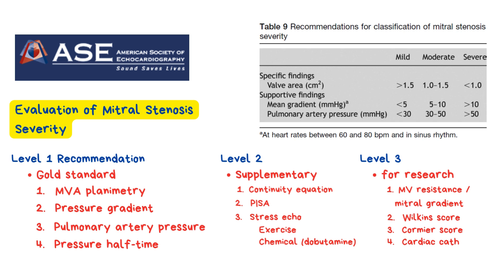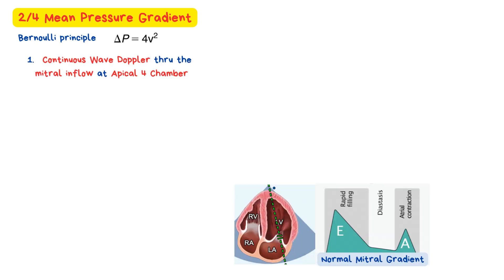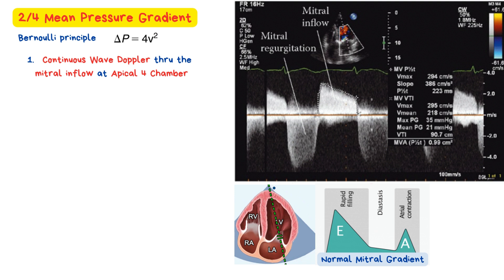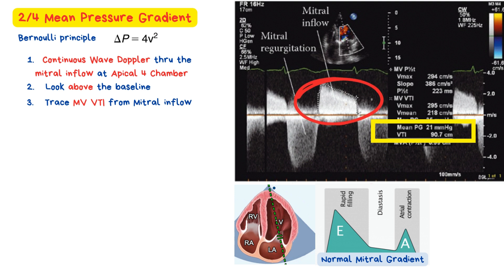Let's dive deeper into our second Level 1 recommendation: mean pressure gradient. The mean pressure gradient is calculated by the machine using the Bernoulli principle. We start by using the continuous wave Doppler, placing the cursor through the mitral inflow, typically from the apical four-chamber window. Make sure you're looking above the baseline, since blood is flowing up towards your probe — from the left atrium to the left ventricle. Once lined up, freeze the clip and trace the Mitral Valve Velocity Time Integral, or MVVTi. This will give us both the MVVTi and the mean pressure gradient.